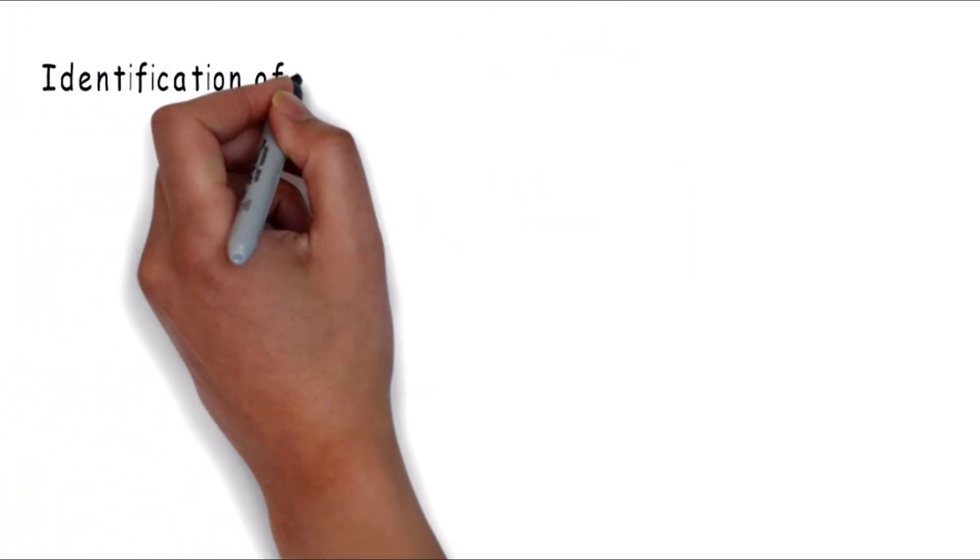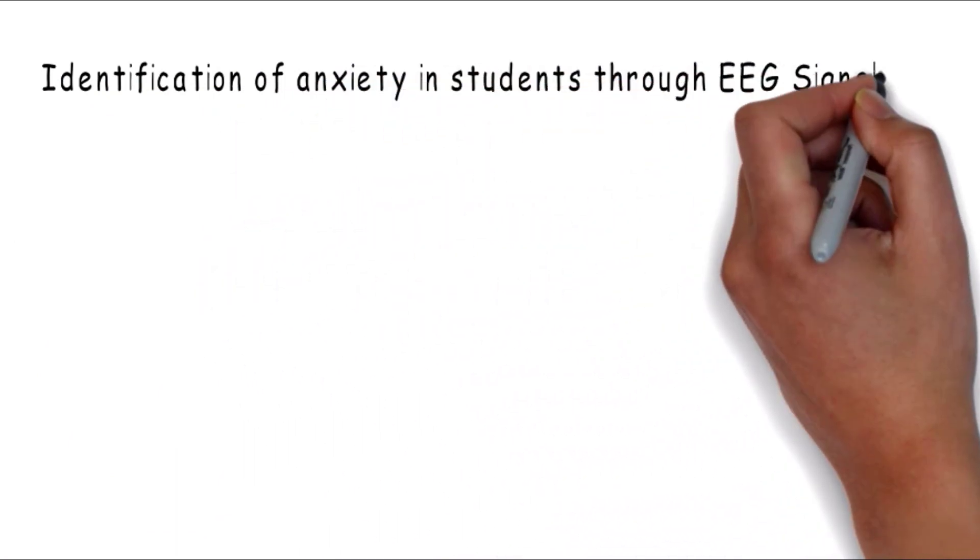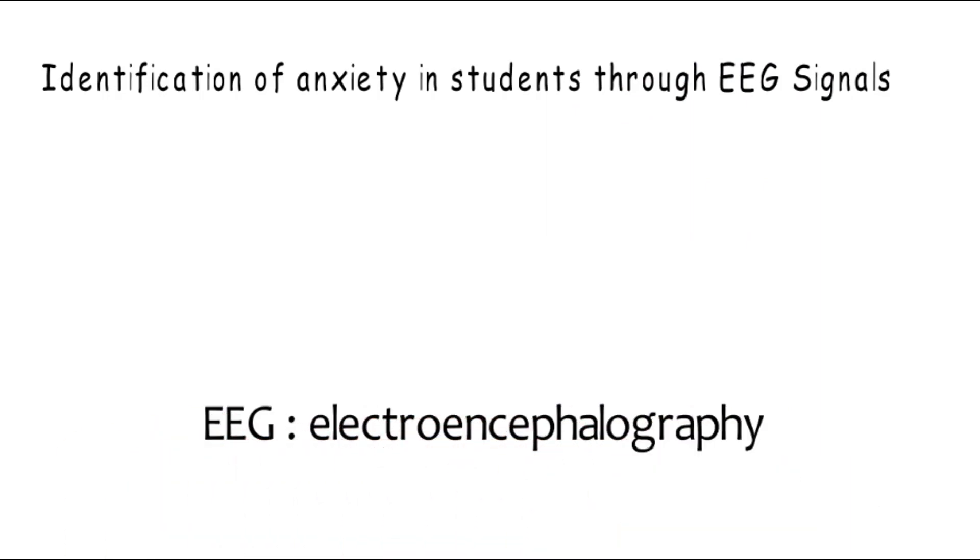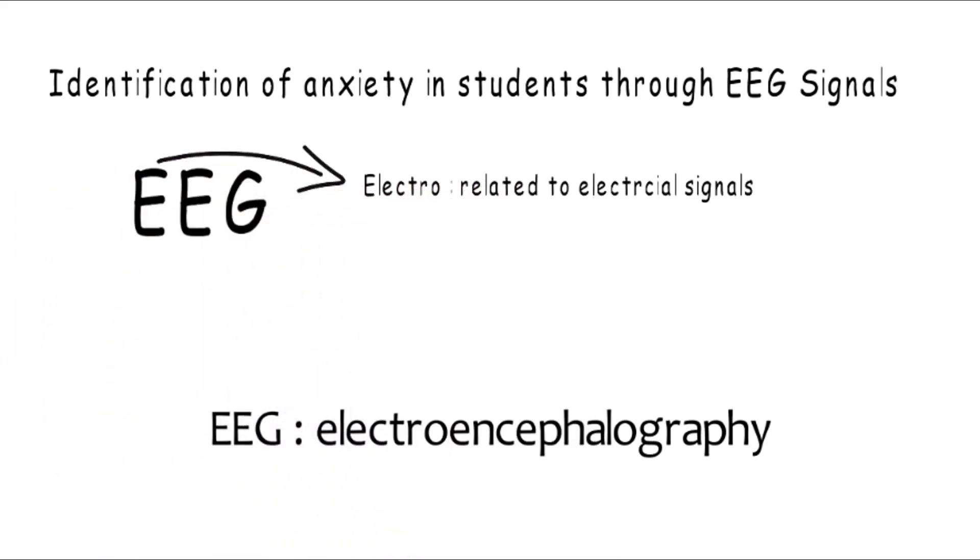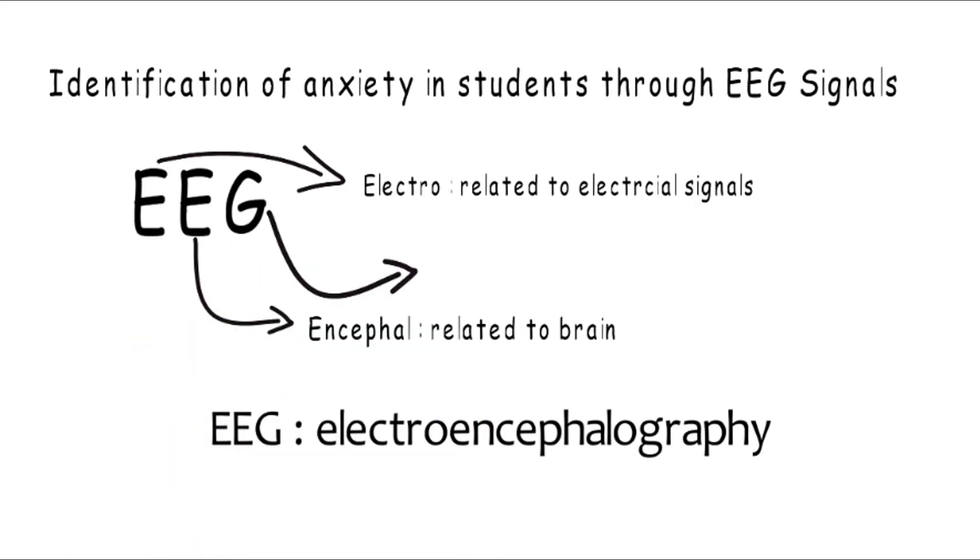As previously mentioned, we are identifying anxiety through EEG signals. So let's start with what is EEG. It is an abbreviation of electroencephalography. Electro means relating to electrical signals. Encephal or encephalo is a term used to discuss the things related to brain.